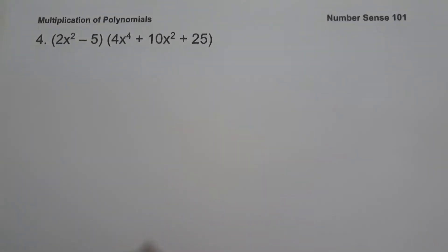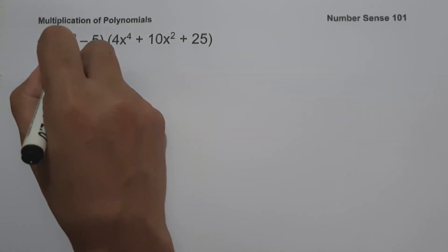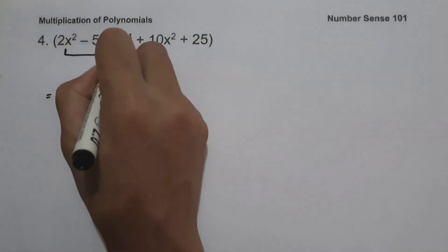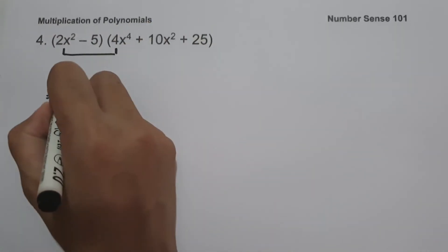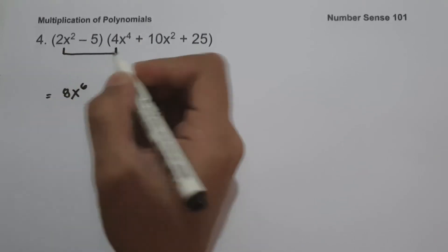On example number 4, we have the quantity 2x squared minus 5 times the quantity 4x raised to 4 plus 10x squared plus 25. So let us simplify. 2x squared multiplied by 4x raised to 4: add their exponents to get 8x raised to 6.